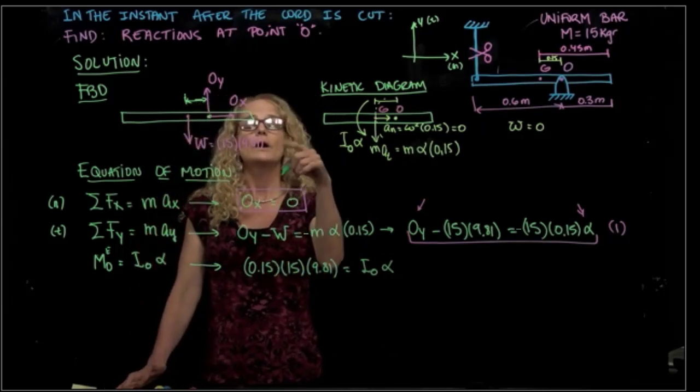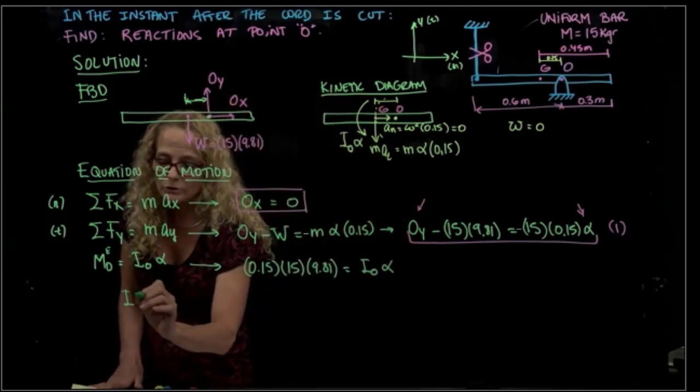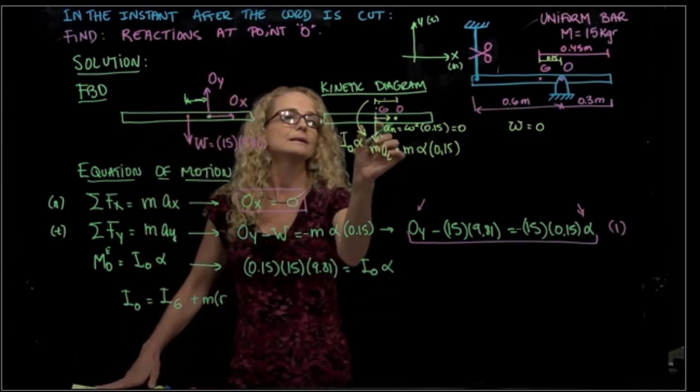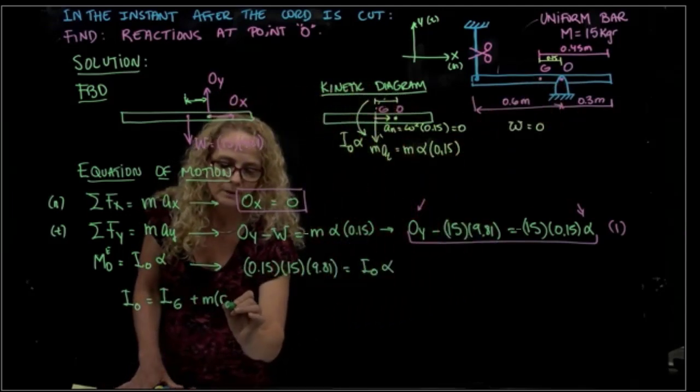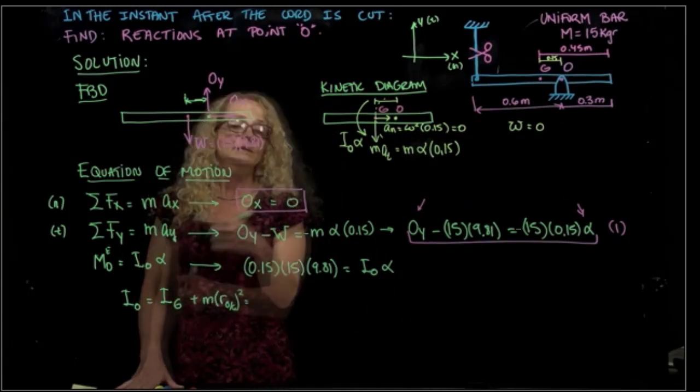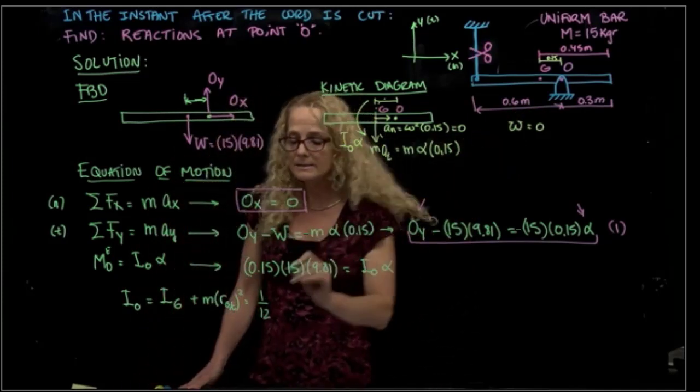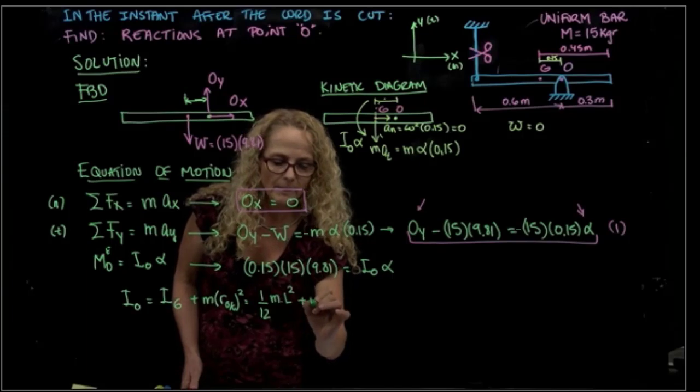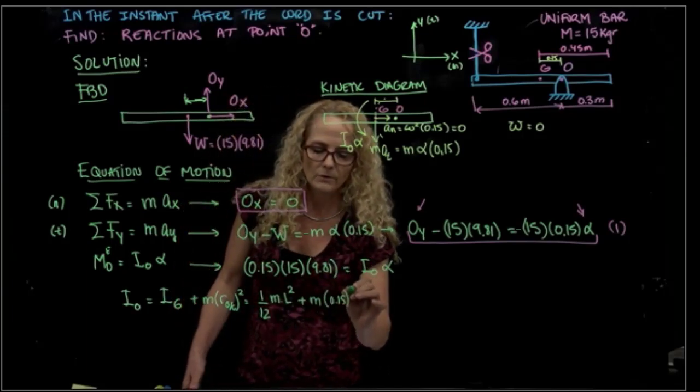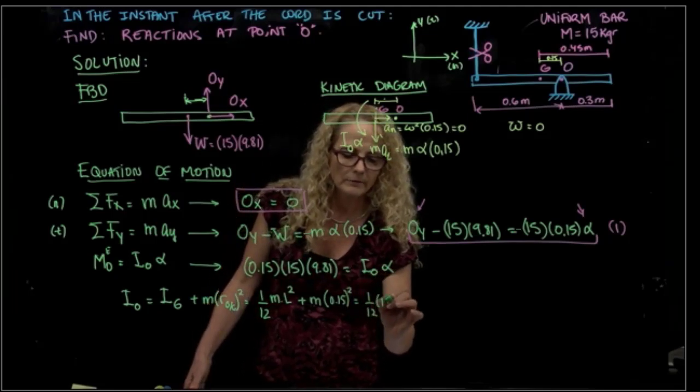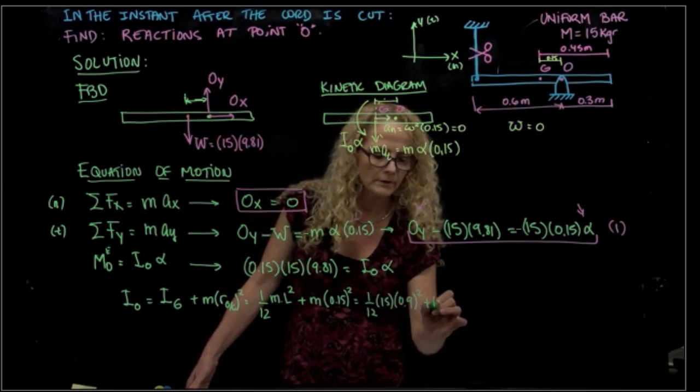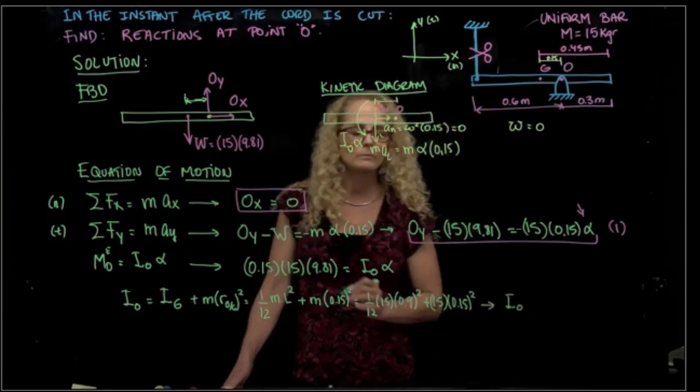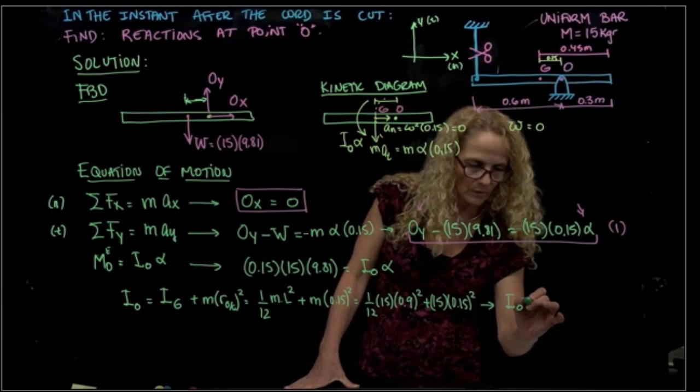How much is the inertia at point O? We have to use the theorem of parallel axis. Inertia at O will be the inertia at the center of mass plus mass times the distance between point O and center of gravity squared. The inertia at center of gravity is 1/12 times the mass times the length of the whole bar. At the end, it will be 1/12 times mass times 0.9 squared plus 15 times 0.15 squared. That gives me that the mass moment of inertia at O equals 1.35 kilogram meters squared.